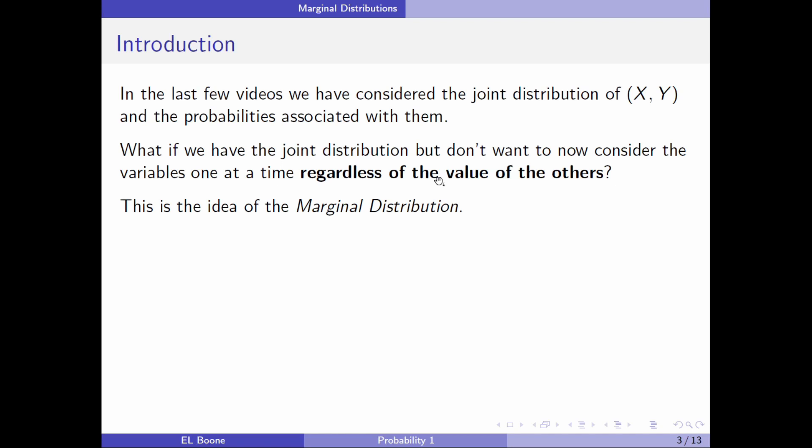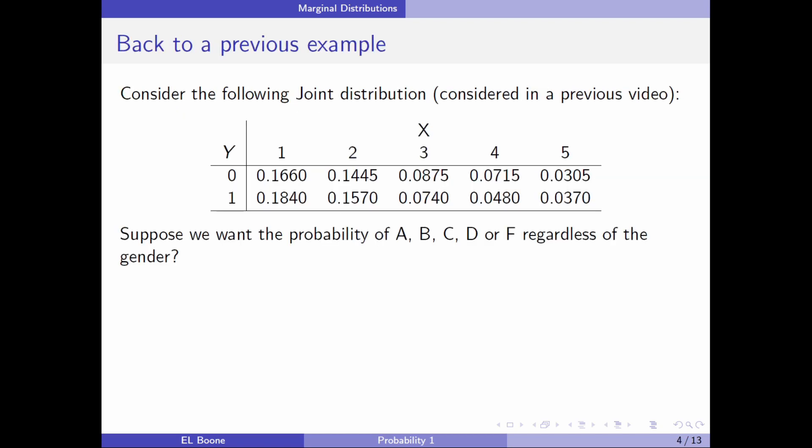Okay, in the past few videos we've been looking at joint distributions of x and y for both continuous and discrete, and how to get the probabilities out of those distributions. But the question is, what if I have a joint distribution but I want to know the distribution of one of the variables, regardless of what the other variable is? And this is the idea of a marginal distribution.